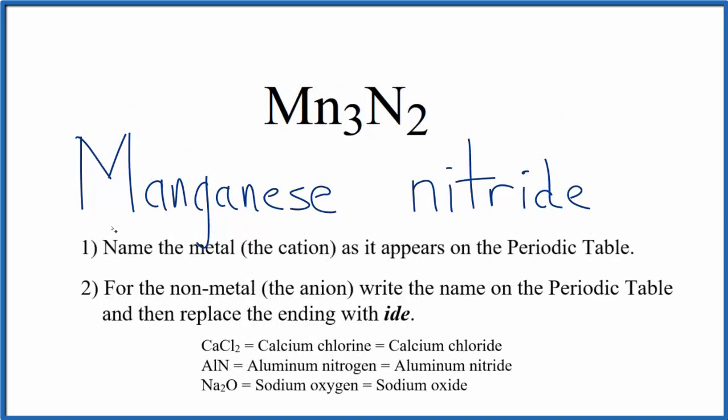And so far we have the name manganese nitride for Mn₃N₂, but manganese, that's a transition metal, so we need to write the charge in the name.